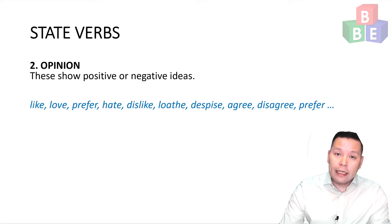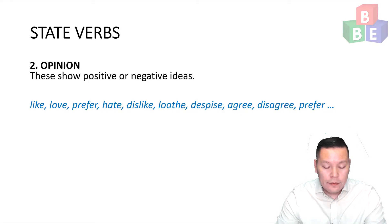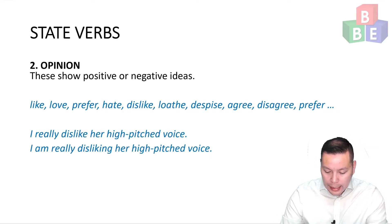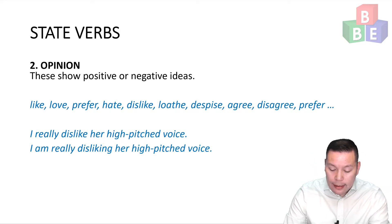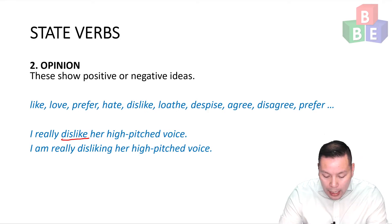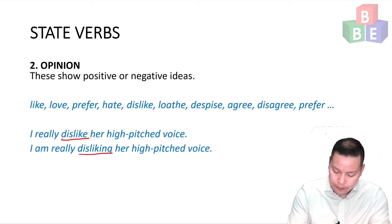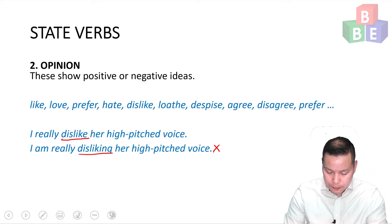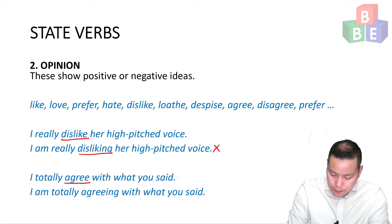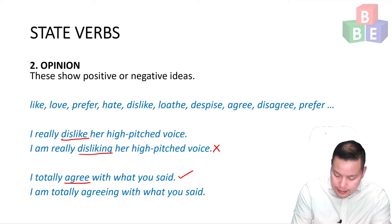The second group of state verbs is opinion. These show positive or negative ideas. For example, like, love, prefer, hate. An example sentence: I really dislike her high-pitched voice — dislike is the state verb. I am really disliking her high-pitched voice — this is not correct. Another example: I totally agree with what you said — agree is a state verb. I am totally agreeing with what you said — this is incorrect.